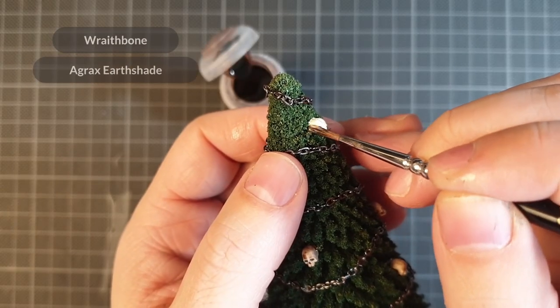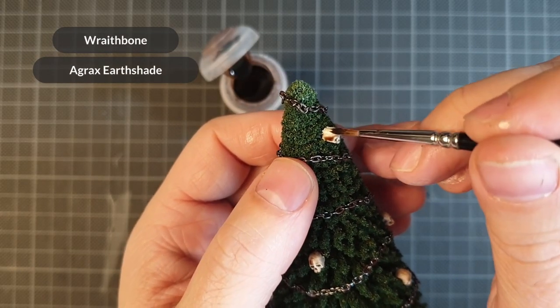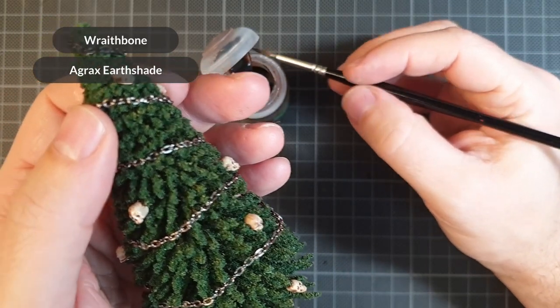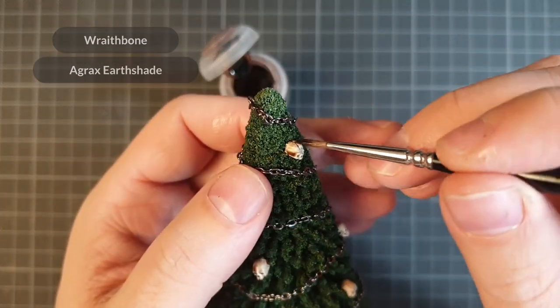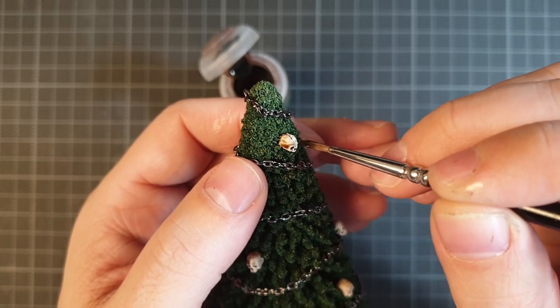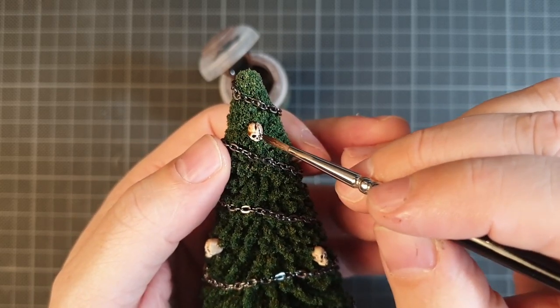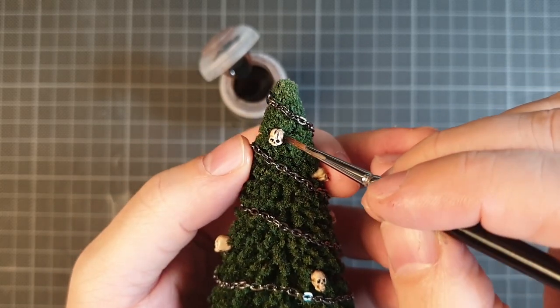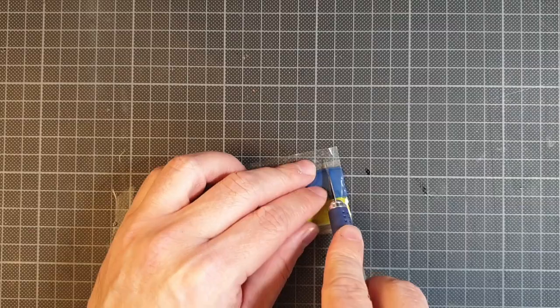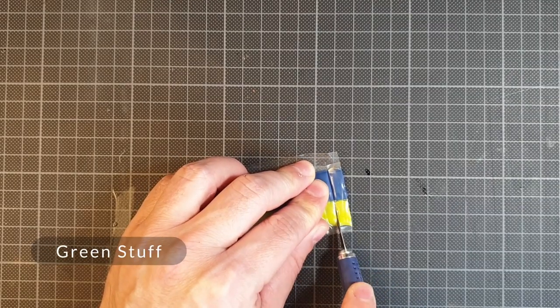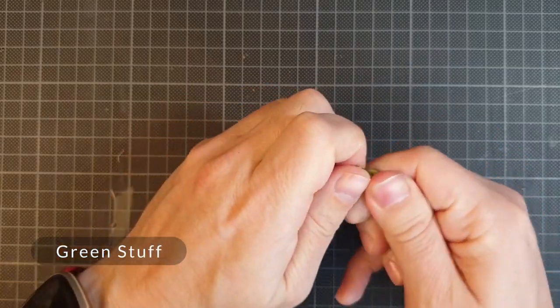I painted the skulls with Wraithbone and gave them a wash of Agrax Earthshade. They were mostly going to be covered by snow anyway, so there wasn't any need to paint too many details on them.